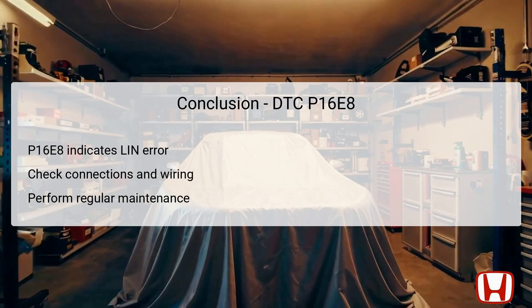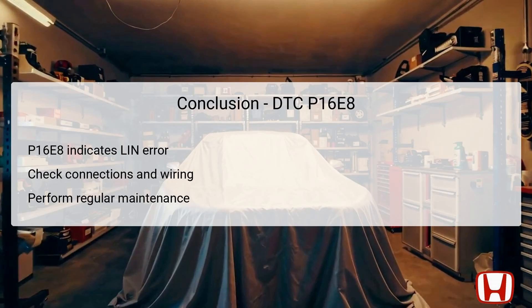In conclusion, the DTC P16E8 signifies an issue with the LIN communication specifically related to the shutter grille. A thorough troubleshooting process involves step-by-step checks that analyze both electrical connections and component functionality. Identifying and rectifying issues such as poor connections, shorts, or damaged components can successfully resolve this DTC, ensuring efficient vehicle operation. Regular maintenance practices, including connection checks and using genuine parts, will lessen the likelihood of encountering such issues in the future. Ultimately, attentiveness to both repairs and preventive measures is key to maintaining optimal vehicle performance.